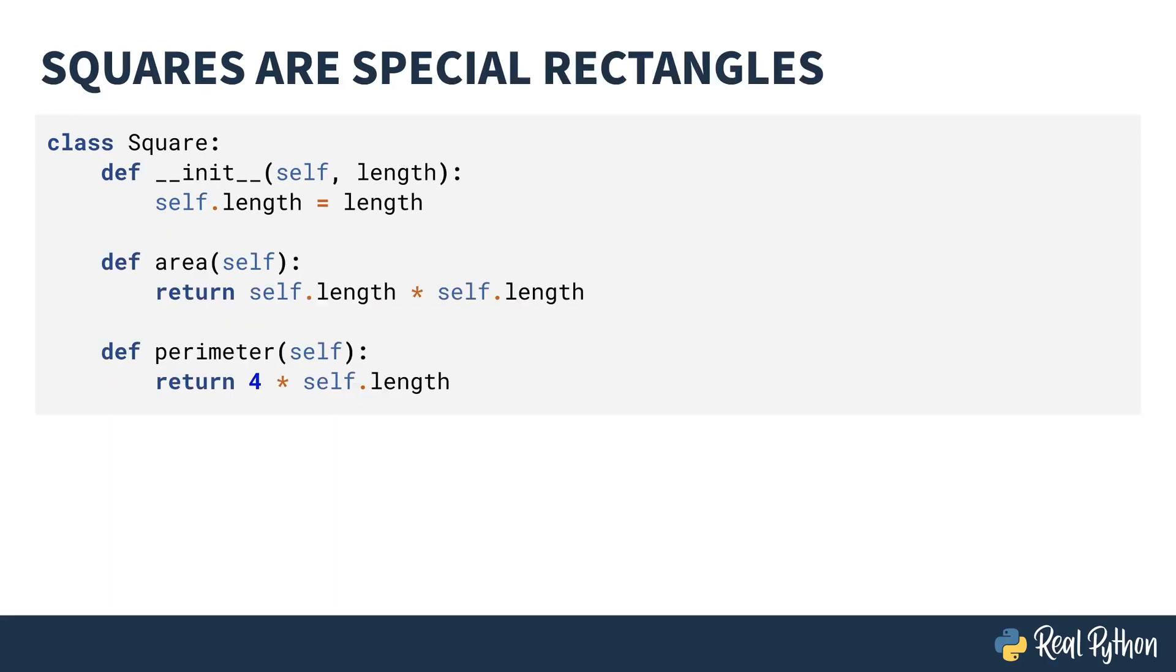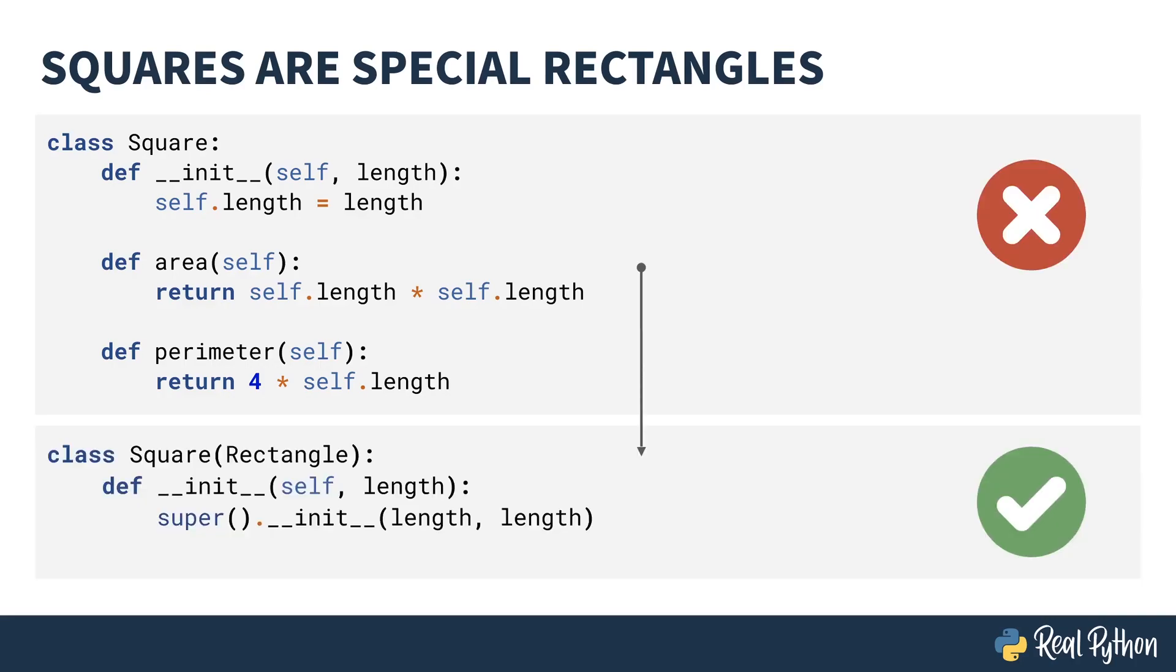The two classes I've defined so far, the square and the rectangle, are very, very similar. This is a problem. If it turns out there was a bug in the area method of one, because I duplicated in the other, I probably have to fix it in two places. One of the ways of simplifying this is by using inheritance. Instead of defining the square and the rectangle separately, I'm going to define the square based on the rectangle, replacing the code you see here with the new code at the bottom.